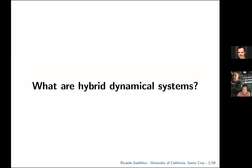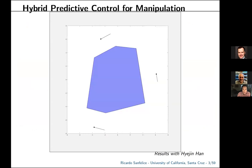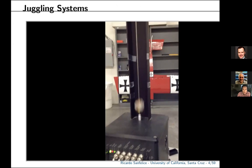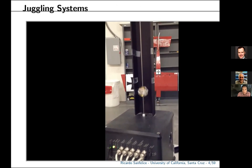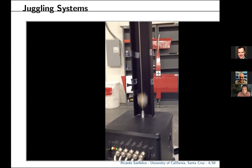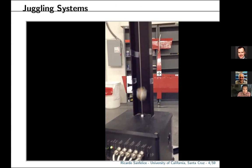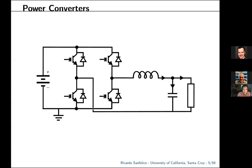Let me start by telling you a little bit about what we mean by hybrid systems, because there are many ways to model them, reason about them, and analyze them. One example is multiple manipulators reaching close contact with an object — when contact occurs there's typically a transition in the controller. Systems that incur impacts, like a juggling system, are modeled with continuous evolution and then every time there is an impact, a very rapid change — what we call a jump in the system.